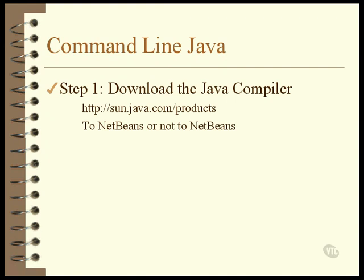Of course, you can pick one and try it, then uninstall it, then try another. There's no problem loading several different versions of the command line compiler onto the same machine — they don't interfere with each other in any way. Once you have downloaded the file from Sun, you'll need to execute it, and it will guide you through the installation process, which is really nothing more than selecting some options and an installation directory. The default selections are fine.